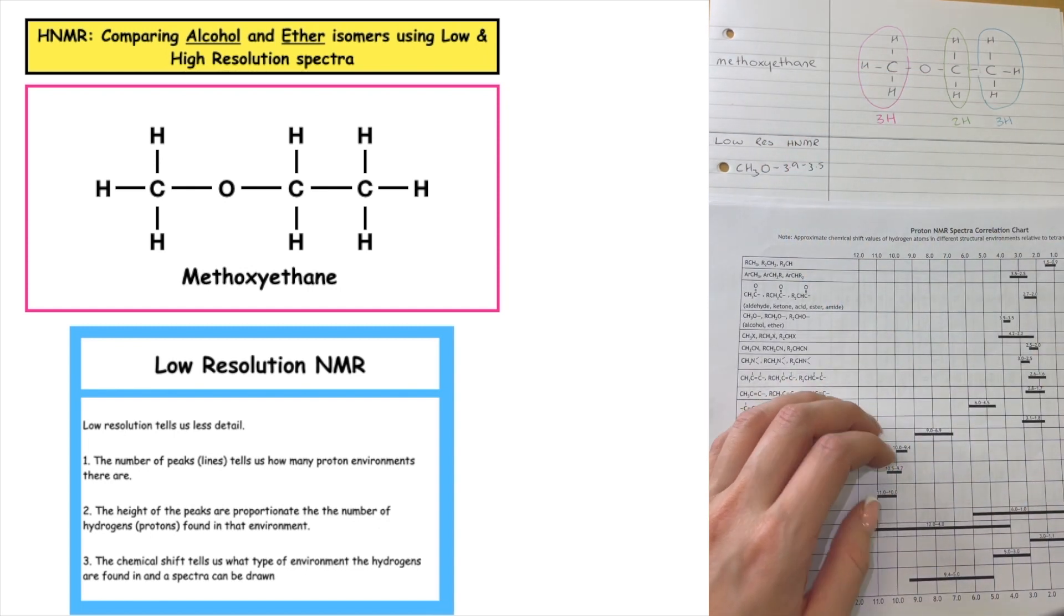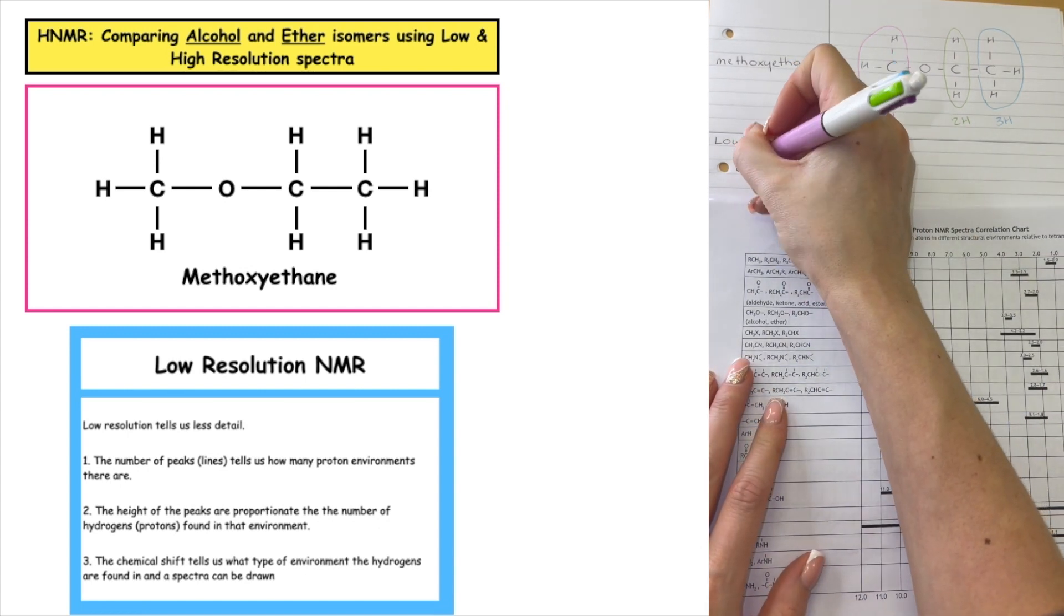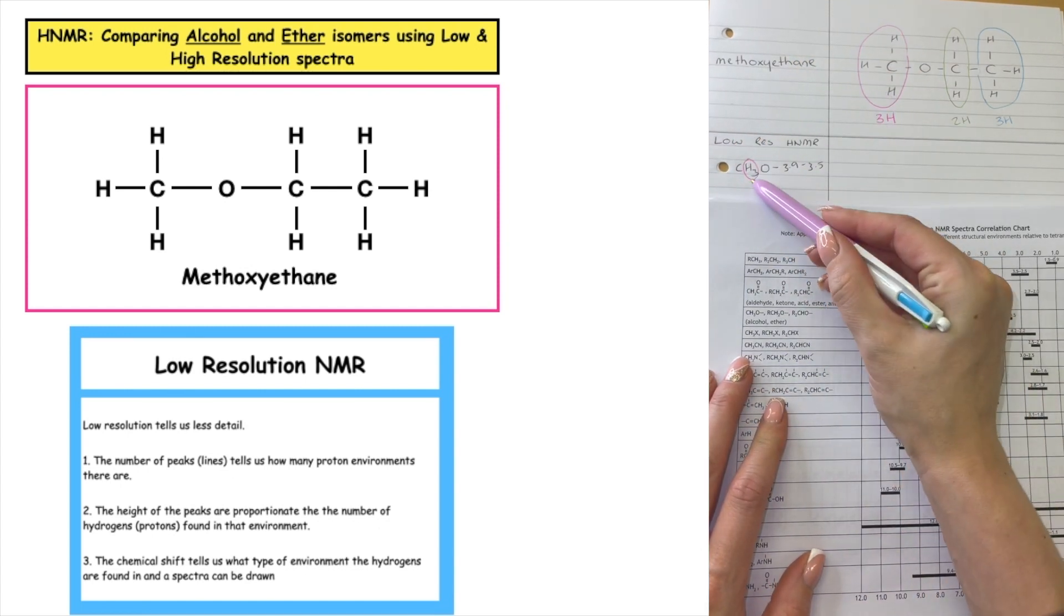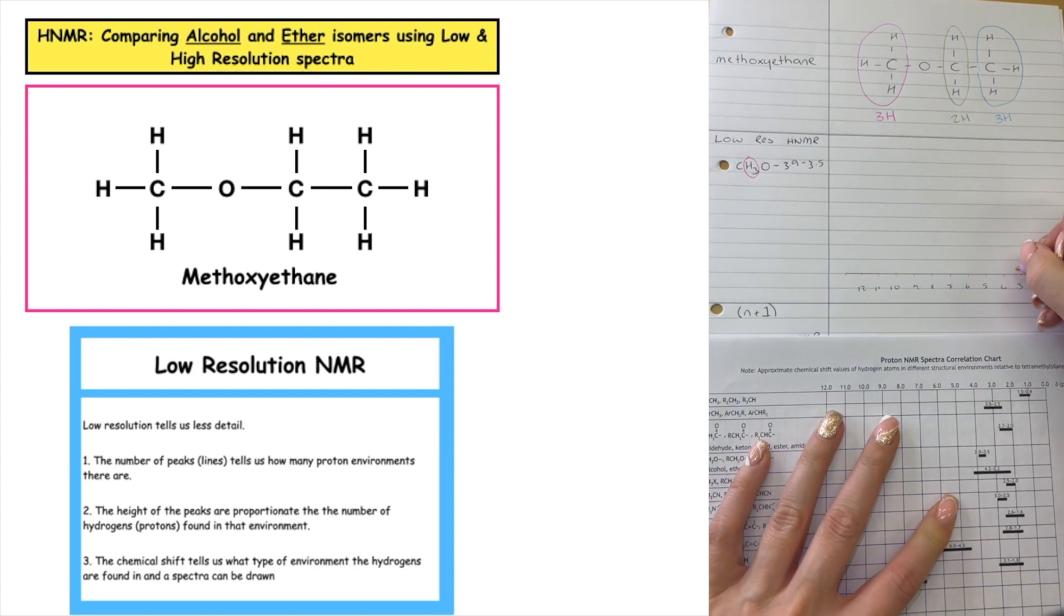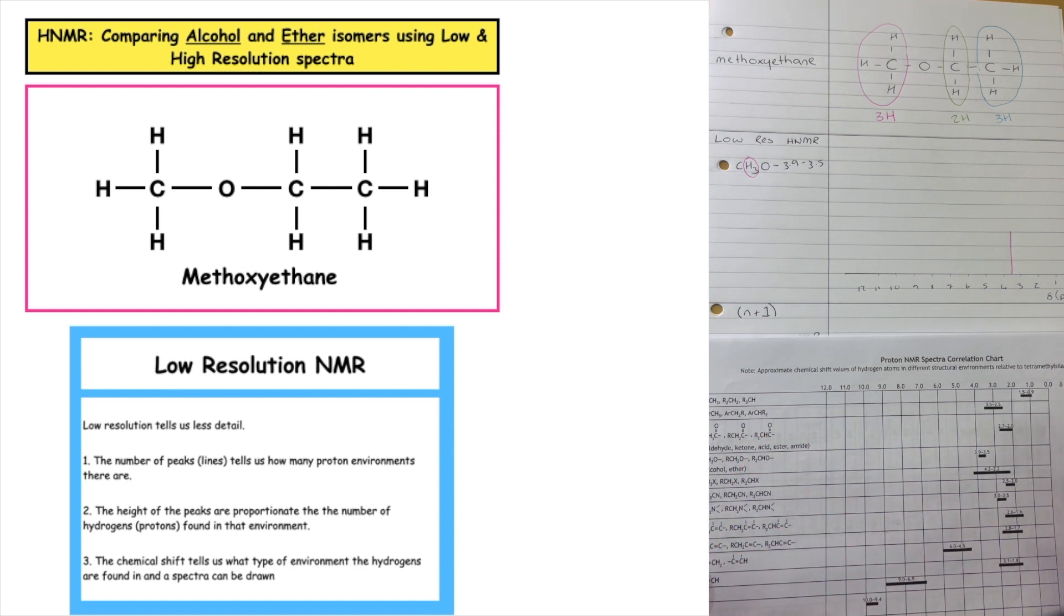Now remember, the hydrogens I'm interested in are these ones here that are in that proton environment. And that's going to be a height of 3. So I'm going to put it at 3.5 and I'm going to do a height of 3 here to represent that proton environment.